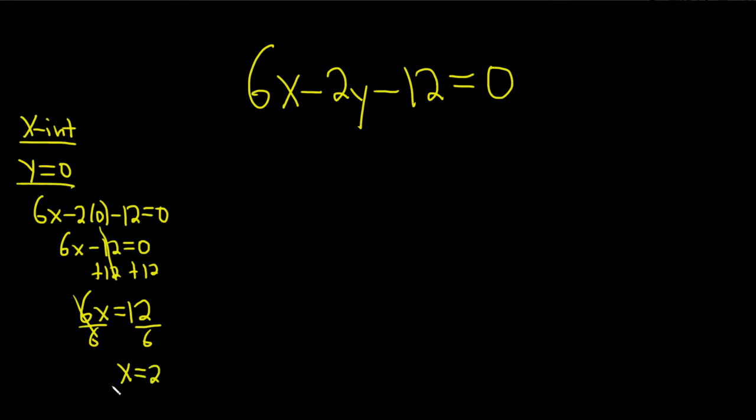So when y is zero, x is 2. Let's write that as an ordered pair, x is 2 and y is zero and this is the x-intercept.